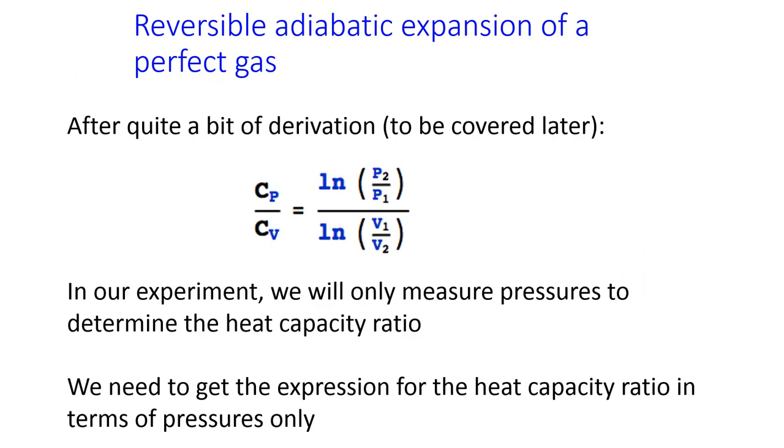When we do a reversible adiabatic expansion of a perfect gas, we can get the ratio between these two heat capacities, the constant pressure and constant volume heat capacity, as a ratio of a ratio of pressures and volumes.